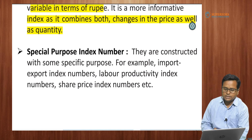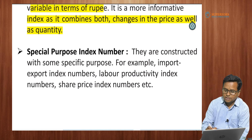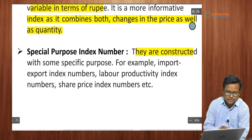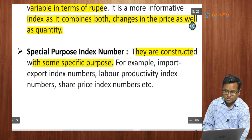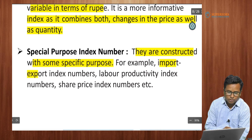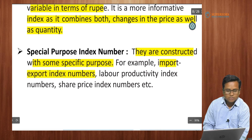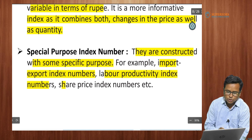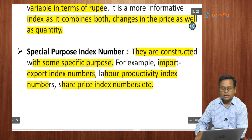Special purpose index numbers are constructed with some specific purpose. For example, import-export index numbers, labor productivity index numbers, and share price index numbers — such as the Sensex — are special purpose index numbers.